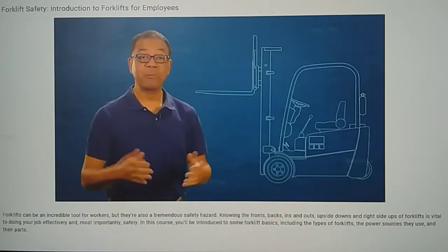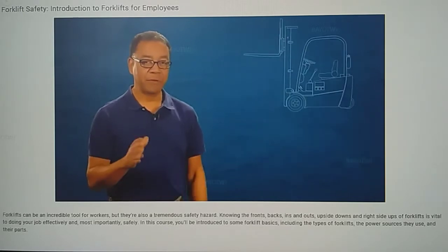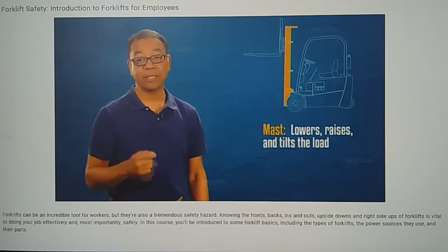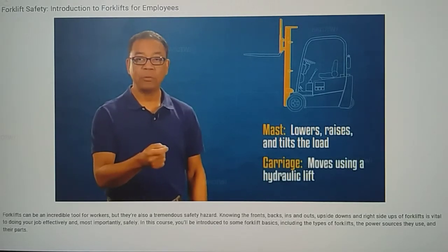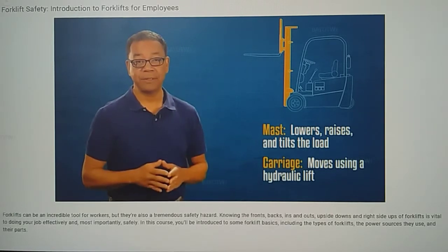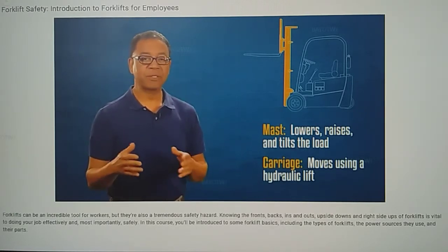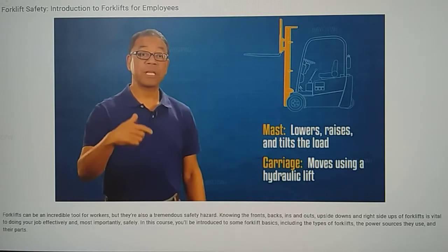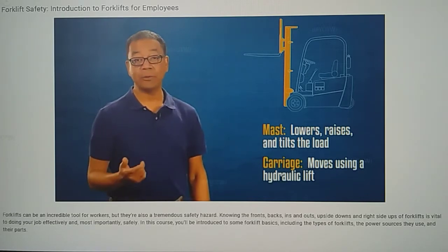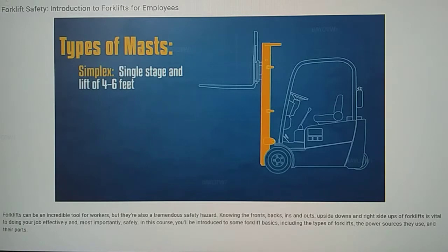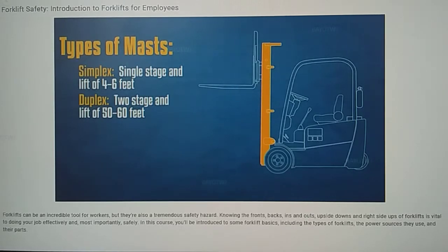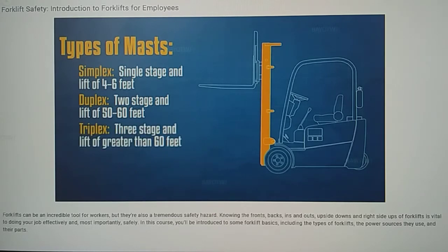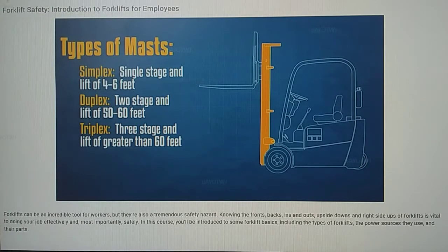Let's start with the mast and carriage. The mast is the vertical assembly that does the work of lowering, raising, and tilting the load. The mast supports the carriage, which is moved up and down via hydraulic lift. There are several types of masts, defined by stages of extension the mast offers and their free lift distance, or how far up the forks can go before extending the mast. They include simplex, which has a single-stage mast and a limited free lift of four to six feet. Duplex, which has a two-stage mast and a greater free lift of 50 to 60 feet. Triplex, which has a three-stage mast, the same free lift as duplex, but the ability to extend further.